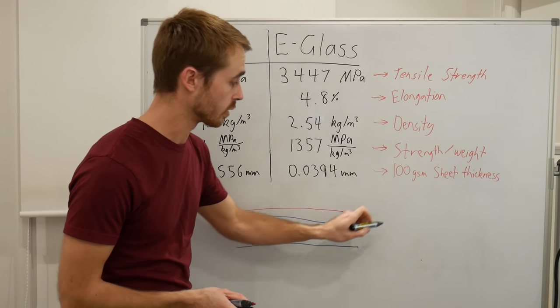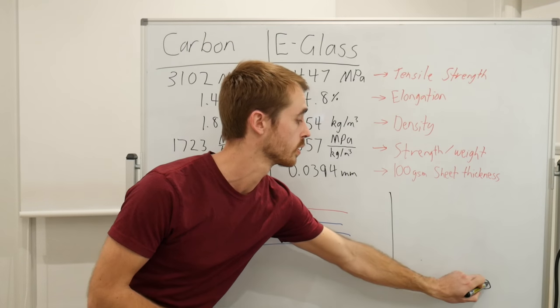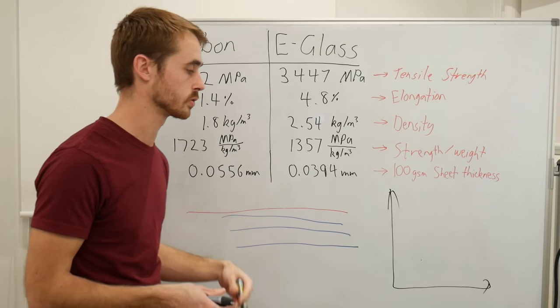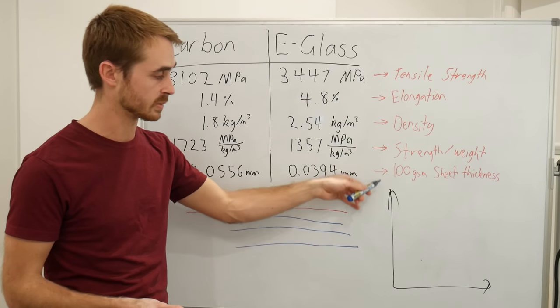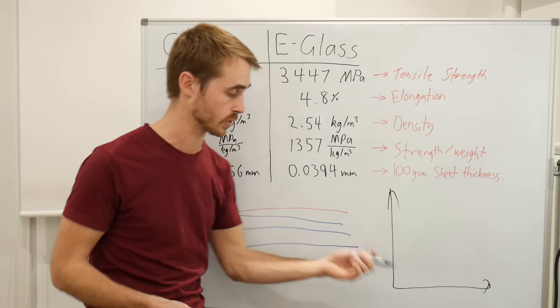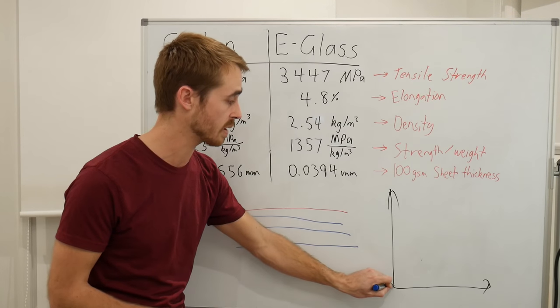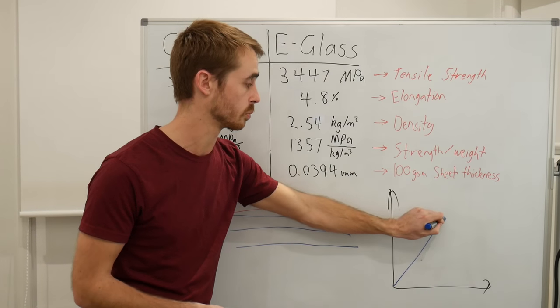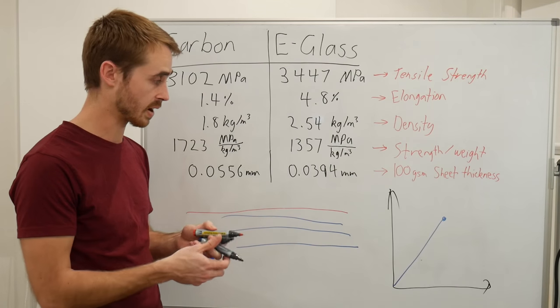What does this mean numerically? If we look at a stress strain plot of our materials, which is basically the force we apply to the material on this axis versus how far it stretches on this axis, we've got our fiberglass breaking here and our carbon fiber here.